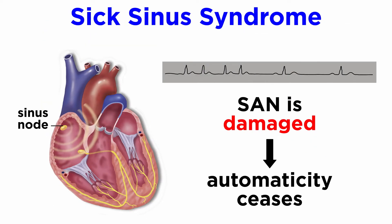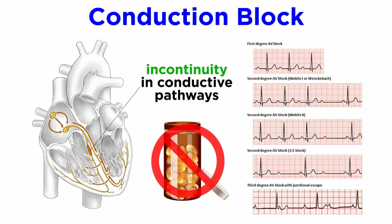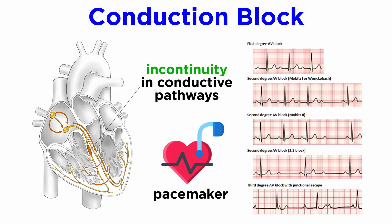Sick sinus syndrome occurs when the SAN is damaged and no longer functions properly, such that normal automaticity set by the SAN can't be carried out. Conduction block, or heart block, is characterized by a discontinuity in the conductive pathways by which the action potentials of normal cardiac contractility permeate the heart tissue. These conditions generally aren't treated pharmacologically with antiarrhythmic drugs, and pacemakers must be implanted.